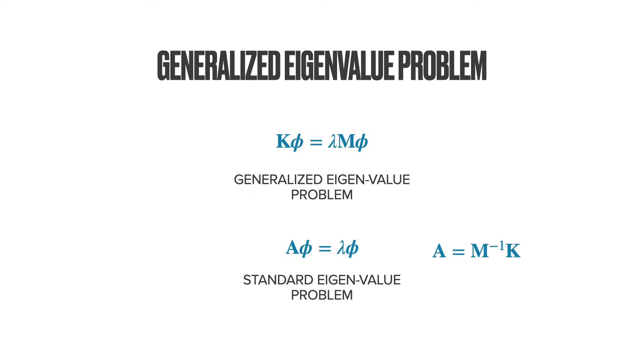If the systems are small, that is, if k and m are small matrices, then we can convert the problem into a standard eigenvalue problem by taking the inverse of m and then solving the standard eigenvalue problem very easily using the characteristic polynomial. That is, computing the determinant and solving the polynomial. This method you would have studied in school.